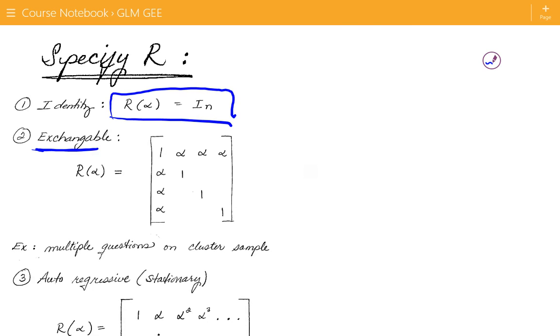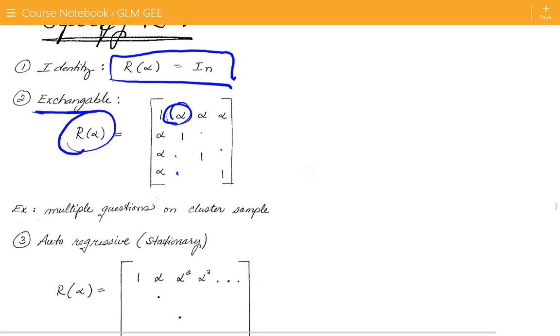Another one is an exchangeable matrix, and that means that the covariances, or the correlations rather, the correlations are all the same. So all the off-diagonal elements are all the same, just alpha. This might be the case if you're again thinking of giving somebody a battery of questions. So there's no real time sequence, it's just a random battery of questions, the order of which are just randomly assigned, and it might be reasonable to assume that the correlation and the outcomes are all the same across each of those possible randomly generated orderings of questions.